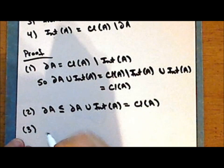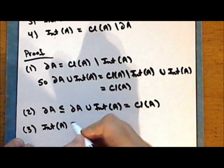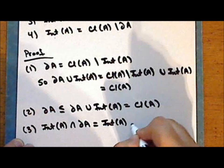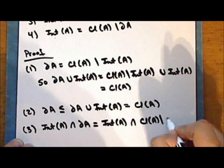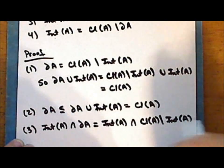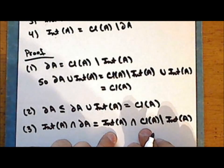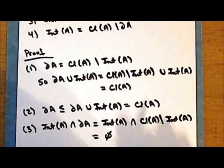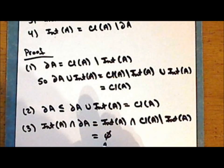Third statement: the intersection of the interior of A with the complement of the interior of A in the closure of A — these two sets have no elements in common, so the intersection is empty; they are disjoint. And so the interior of A intersected with the boundary of A is empty.